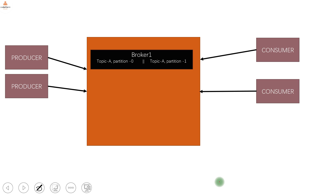When producers are sending the events, they are going into the broker. Inside the broker, there has to be a logical grouping where producers can send the messages. Let's take an example of a banking application where it needs to send messages for notification, log aggregation, account creation, or fraud detection. They cannot send everything to a single group — that will be overwhelming for the consumer and producer — and it will be very difficult to manage. That is where the concept of topics comes into picture.